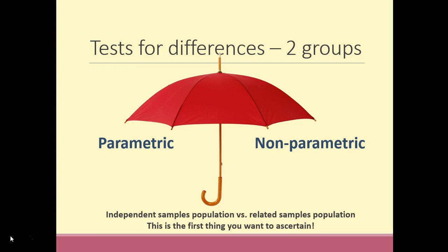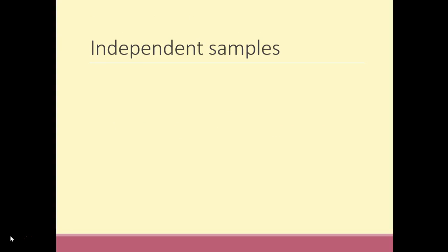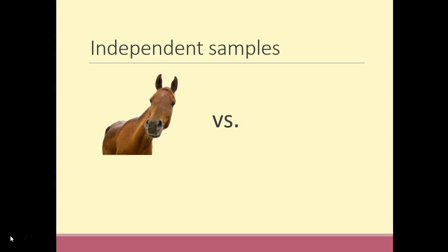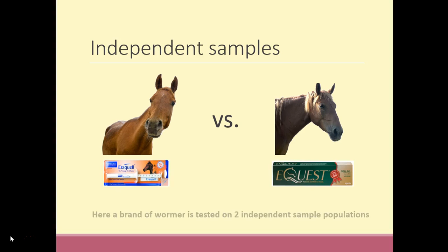An independent samples dataset is one where data comes from two different sample populations. A typical example could be a comparison of two sample groups where one group receives one type of wormer and the other group is treated with a different type of wormer, to investigate how well each works to reduce worm load.